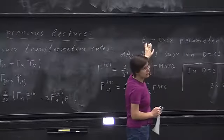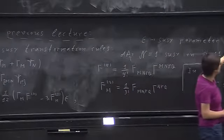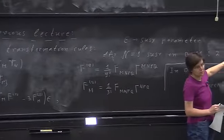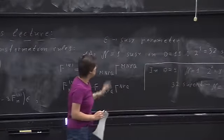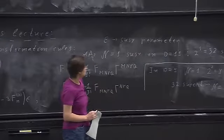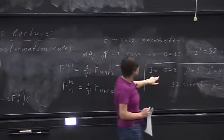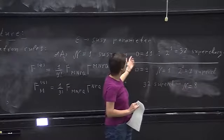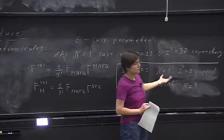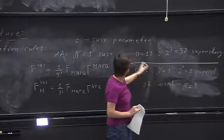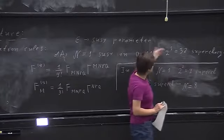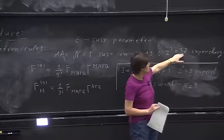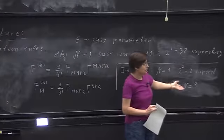This is a spinor in 11 dimensions, so it has 2^5 components, which means 32 supercharges. So there is one supersymmetry — the minimal amount — but there are 32 supercharges. If we compare that to four dimensions, N=1 would mean one spinor with four components, so four supercharges. So N=1 in 11 dimensions is not the same as N=1 in four dimensions. In fact, N=1 in 11 dimensions, or 32 supercharges, corresponds in four dimensions to N=8.